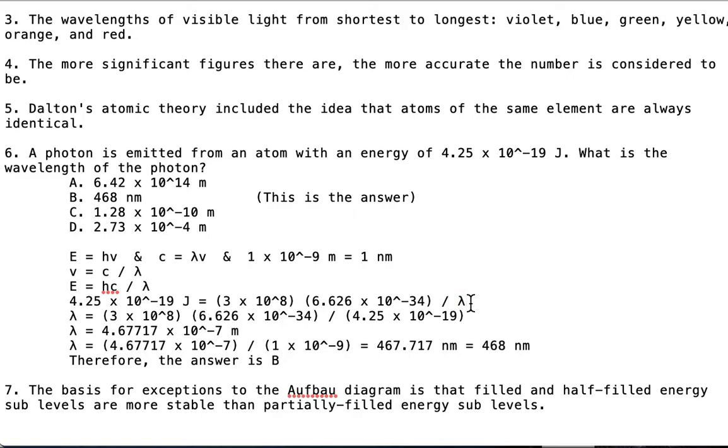Lambda equals the speed of light times Planck's constant divided by the energy. That equals [calculation result] in meters, but we know it's not that, or C and D.